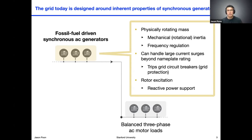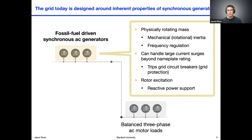Synchronous generators are essentially big things that rotate, and today they're almost all driven by fossil fuels such as coal and natural gas. Over the past 100 to 150 years, we have designed our electric grid to leverage very specific properties of these types of generators. First, synchronous AC generators are literally large physical rotating masses, and the inherent inertia that comes with this rotating mass is a very important property we leverage to maintain the stability of the electric grid.